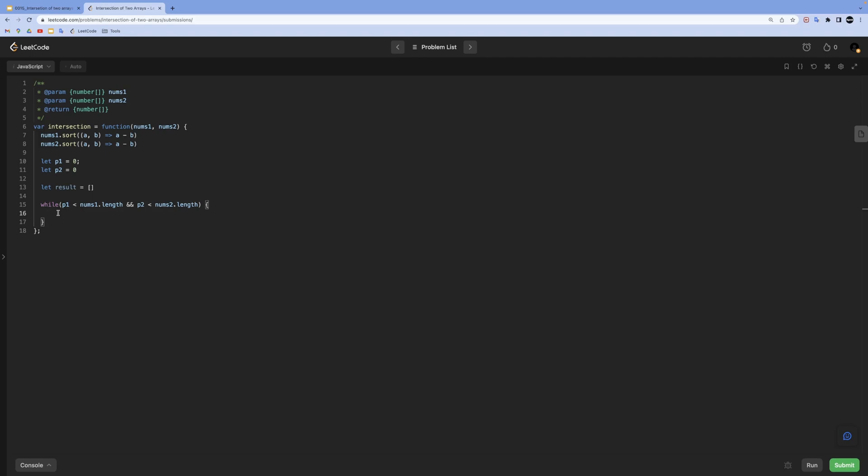So we will do if nums1 at pointer one is equal to nums2 at pointer two, if that is the case we need to do result.push nums1 at p1. Since they are equal it doesn't matter if you grab the value from nums1 array or nums2 array. Then we will do p1 plus plus and p2 plus plus.